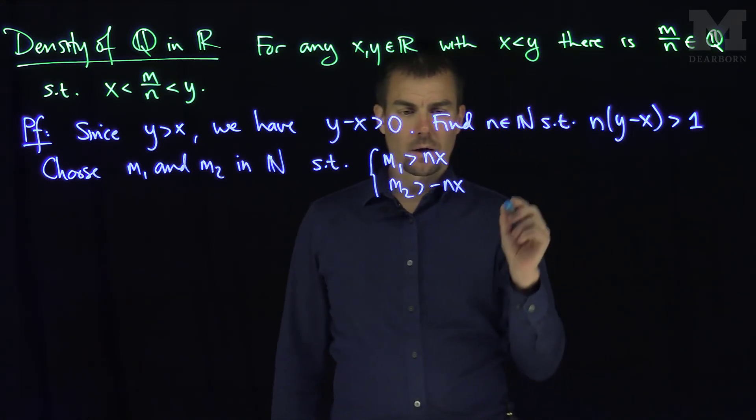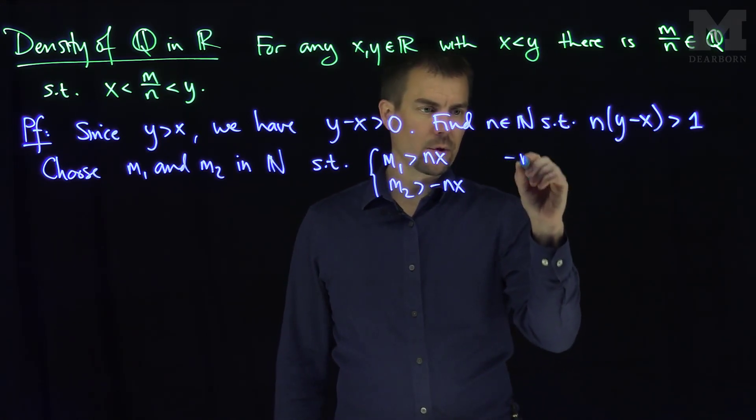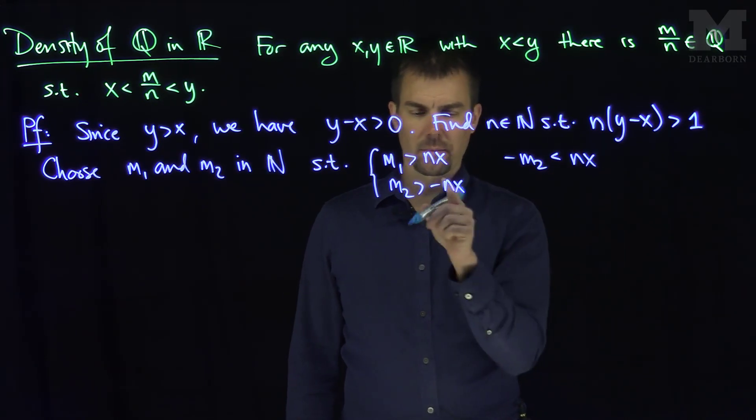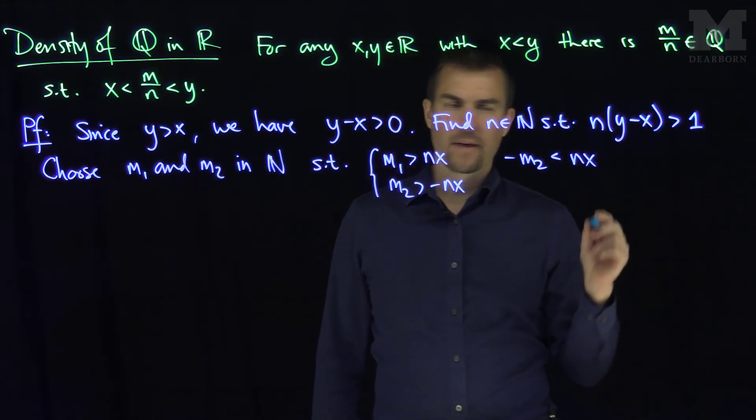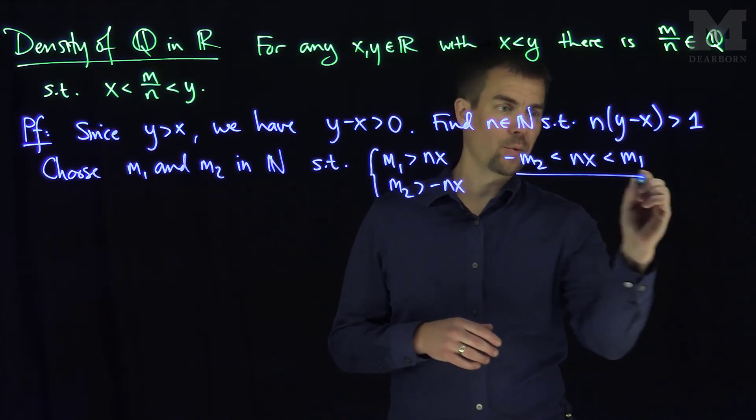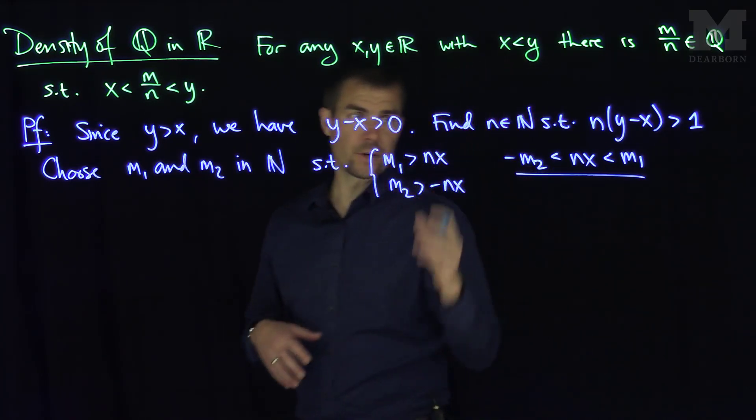So our conclusion is that negative m2 is less than nx, by flipping the sense of inequality over here, and that's less than m1. So nx can be, by the Archimedean property, put between two natural numbers, or two integers in this case.